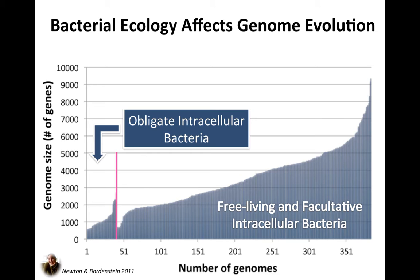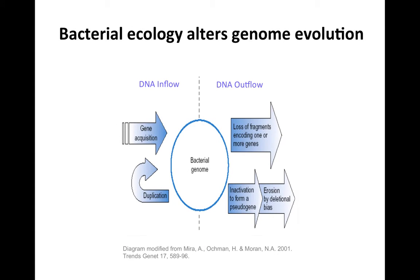Obligate intracellular bacteria are in the act of shrinking, and labs have worked on this question. This diagram, modified from Nancy Moran's lab with Howard Ackman, shows that genome size is a balance between the inflow of new genes — through horizontal gene transfer or duplication — and gene deletion, loss of fragments, inactivation of genes, and erosion by an overall deletional bias. Bacteria in general have a deletional bias; they're always subject to random deletions. This is why bacteria probably don't grow exorbitantly large — never beyond about 12 megabases.